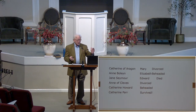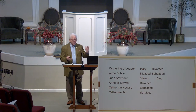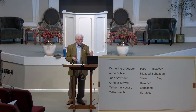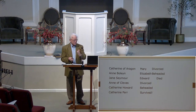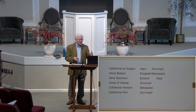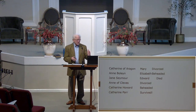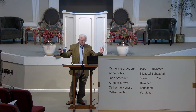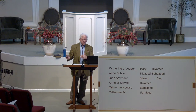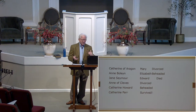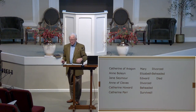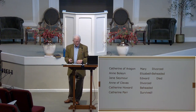Catherine had a daughter, Mary — he divorced her. Anne Boleyn had a daughter, Elizabeth — he beheaded her. Jane Seymour had a son, Edward — she died, bless her heart. Anne of Cleves he divorced. Catherine Howard he beheaded. Catherine Parr survived. That's Henry's six wives.